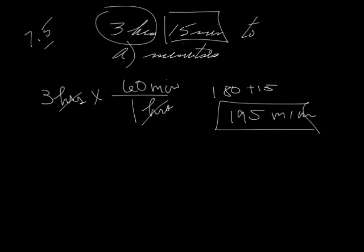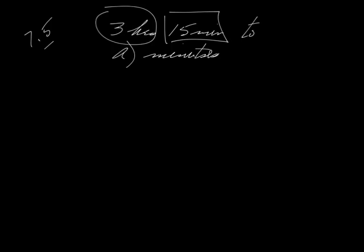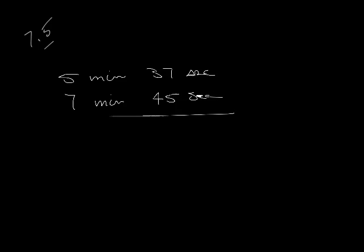In example number 2, they are asking us to add some times together. So we've got 5 minutes, 37 seconds, and they want us to add 7 minutes, 45 seconds. Okay, so what we're going to do here is we're just going to add those. 37 and 45 is 82. 5 and 7 is 12. And that looks good.